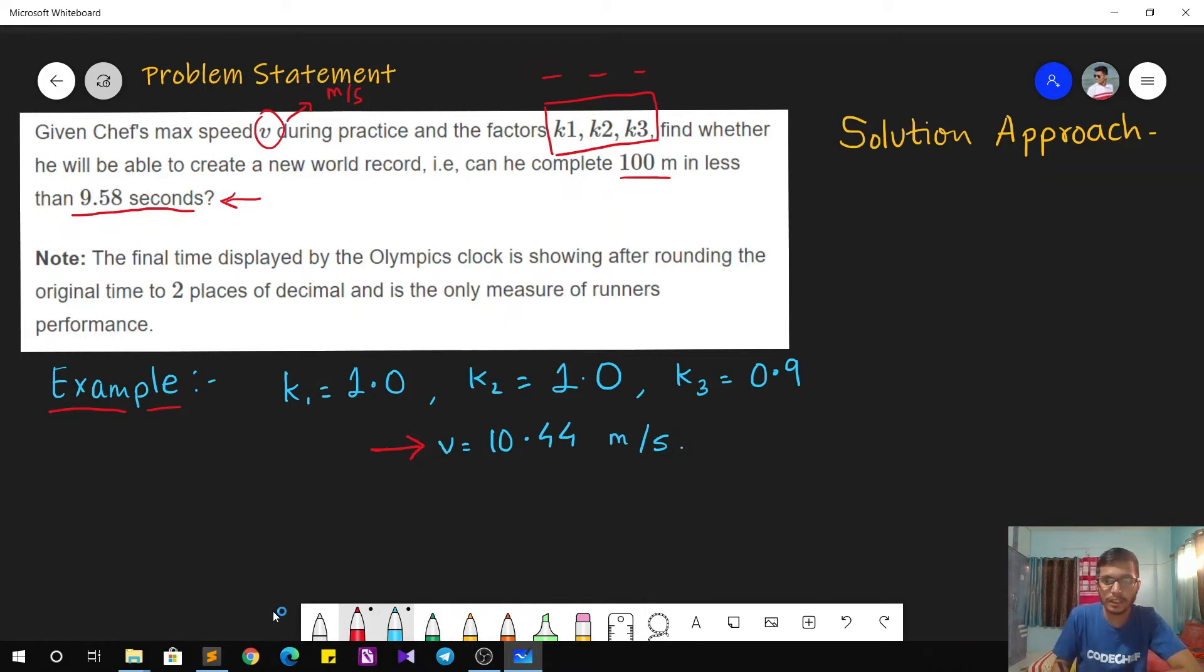So the speed of Chef during the race, let's call it speed, can be calculated as K1 into K2 into K3 into V because the factors are multiplied and they finally get multiplied with the maximum speed during practice. You can understand the same using the sample test case explanation that was given below the question statement.